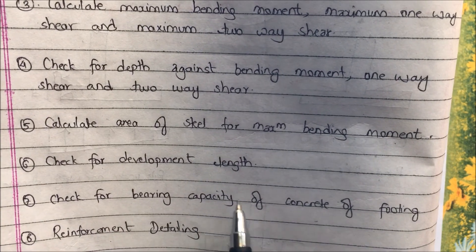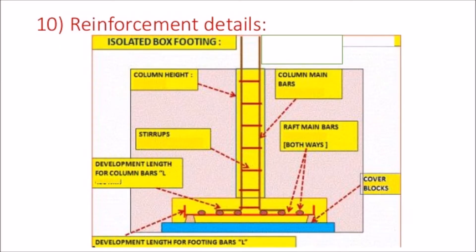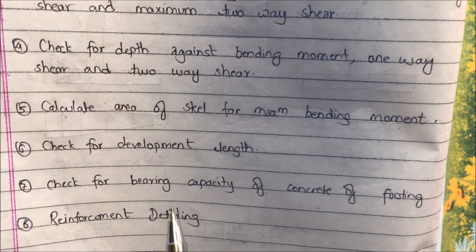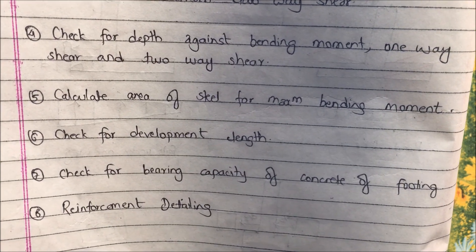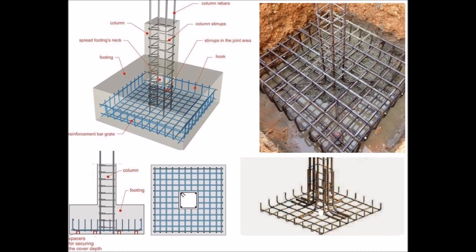Another step is to check for the bearing capacity of the concrete of the footing, to ensure that the bearing stress of the column does not exceed the bearing capacity of the concrete. The last step is for the reinforcement detailing. This combined image shows the reinforcement detailing of the isolated footing. The mesh of the footing is placed over a layer of PCC in the field. For the numerical part, go to part 2 — there is a link in the description.